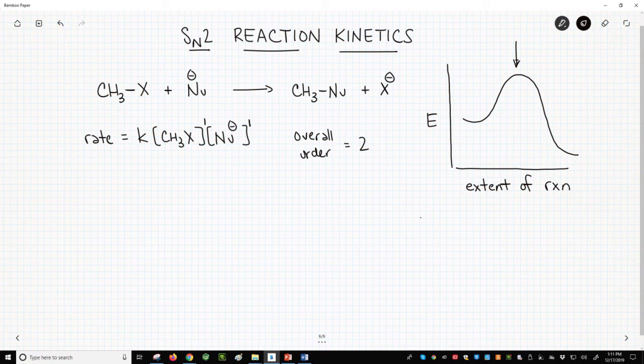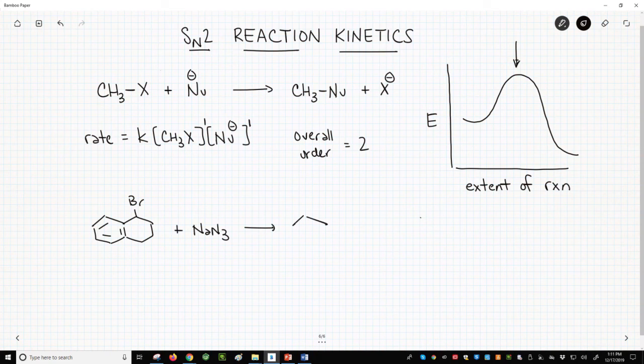How is this information useful? Well, let's say your friend has a problem. Your friend is running an SN2 reaction. Let's write one out. So we can have this bromide.